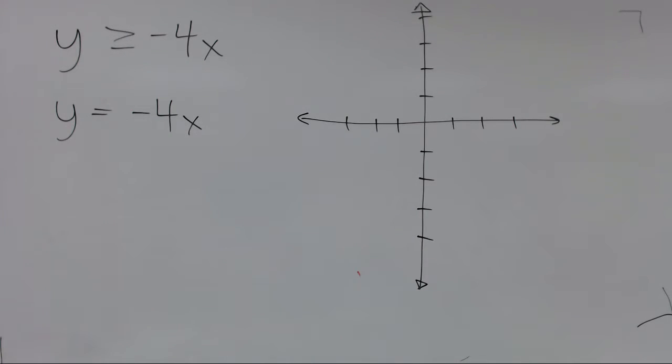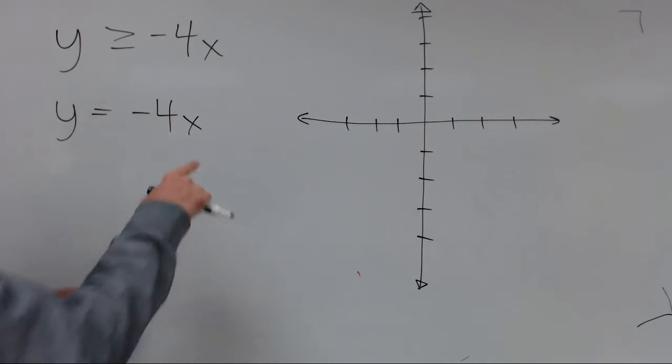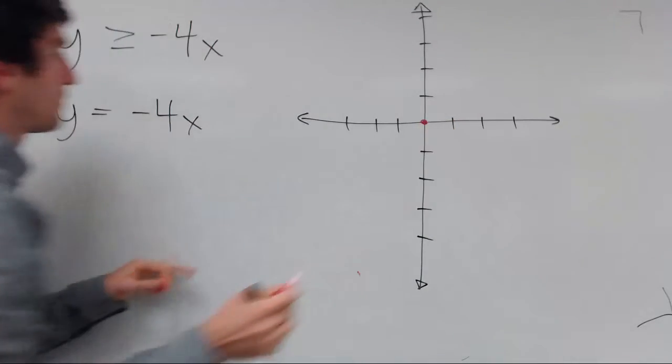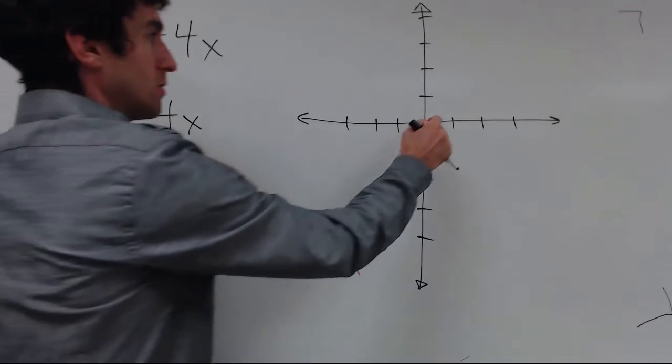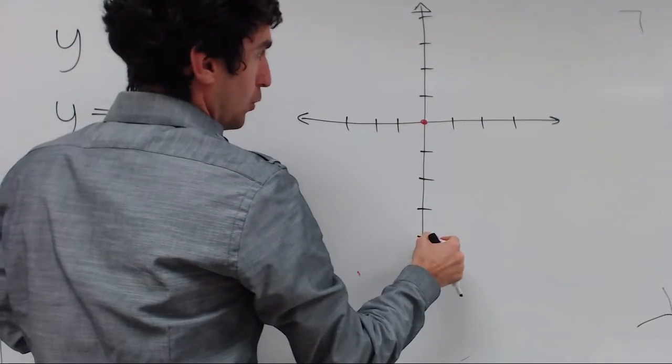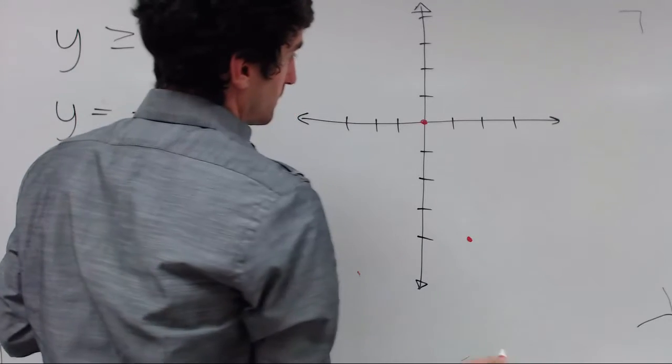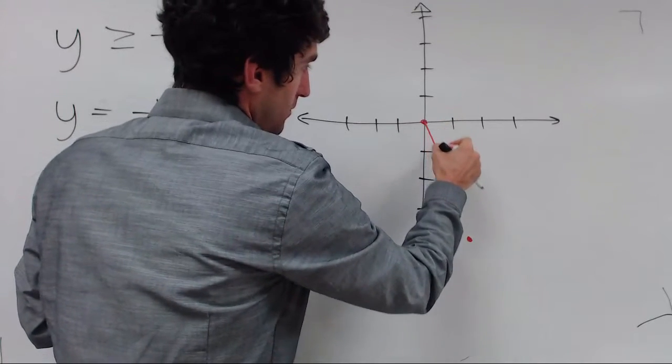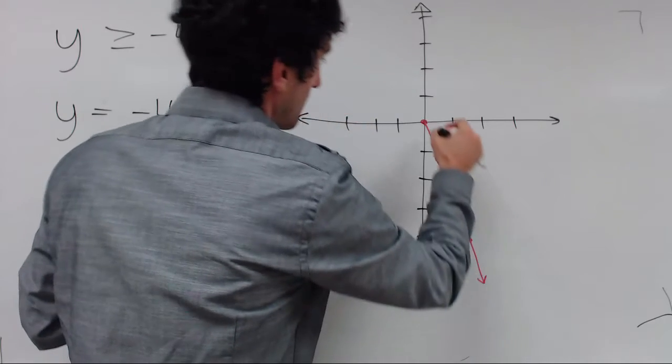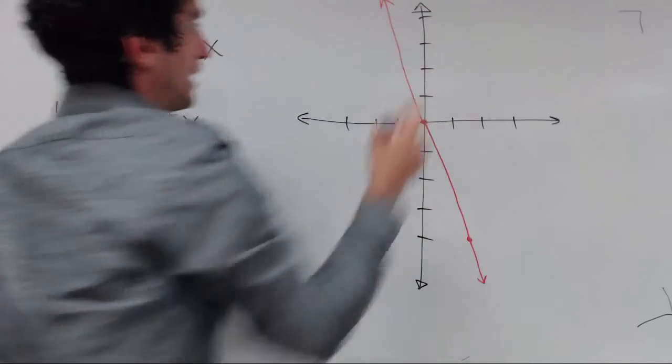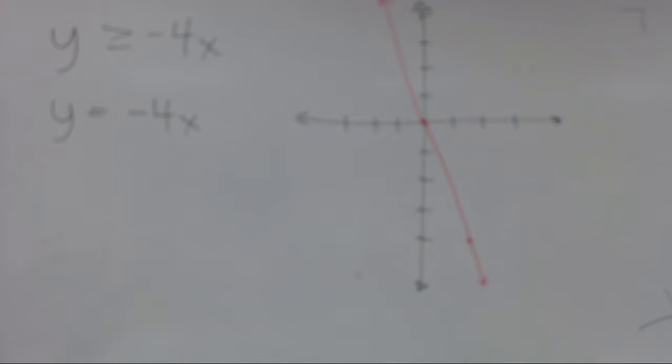So tick marks here just representing one, two, three, and since we have a greater than or equal to sign, we would want to draw a solid line. So y-intercept is zero. Start at zero and the slope is negative 4, so we would go down 4 over 1. And drawing a solid line through those two points, we get the boundary line. And every point on this line is a solution because when y is equal to negative 4x, then it satisfies being greater than or equal.